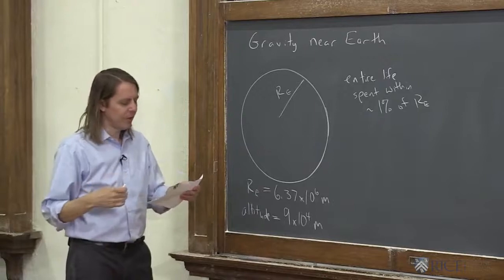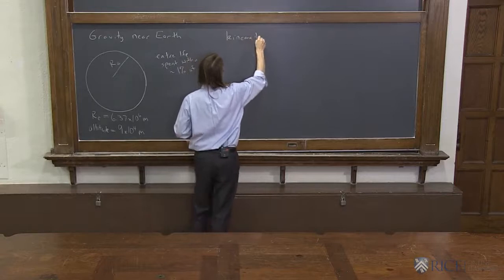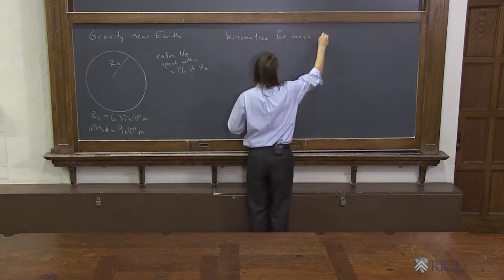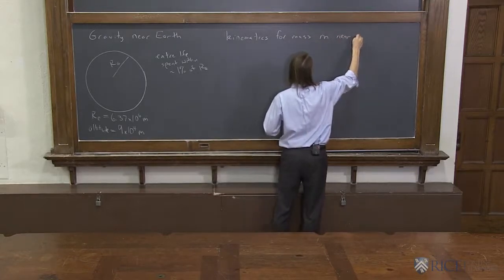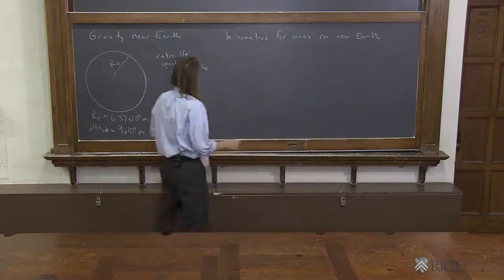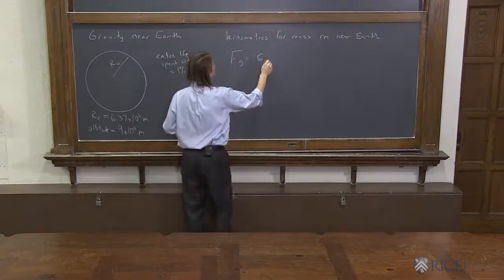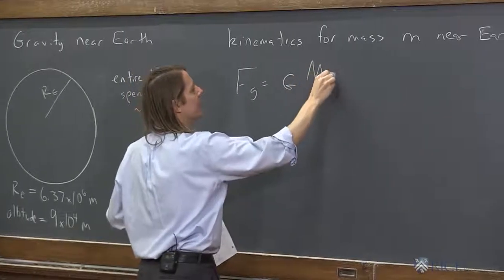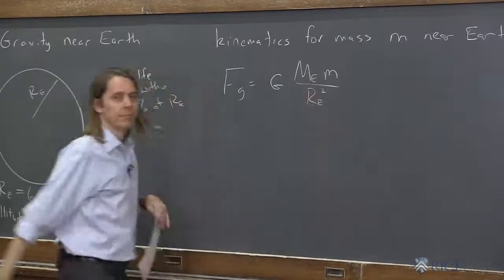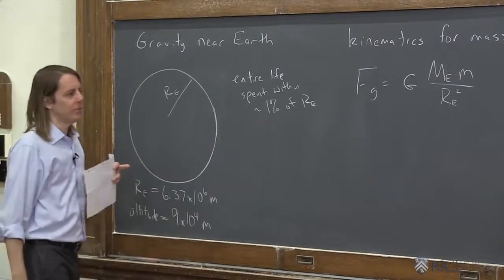So let's put the numbers on that. Let's look at the kinematics for a mass M near the Earth. So we know that mass M is going to feel FG equals big G, mass of the Earth, and that little M over really just the radius of the Earth squared. Because it's always at the radius of the Earth. The variation is essentially nothing, less than 1%.